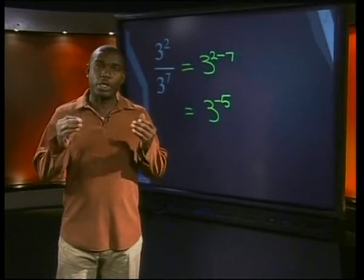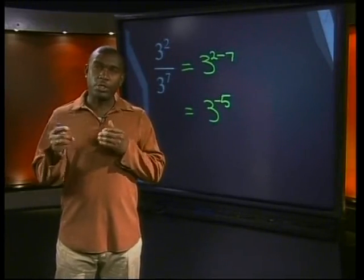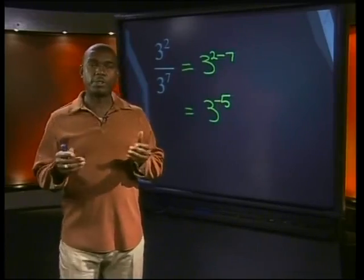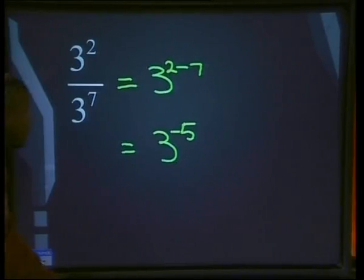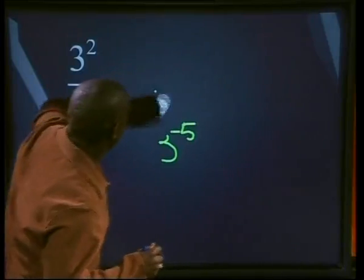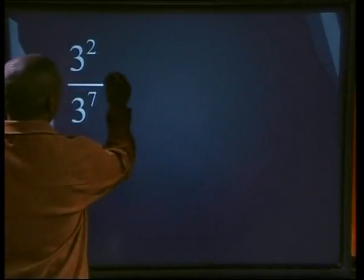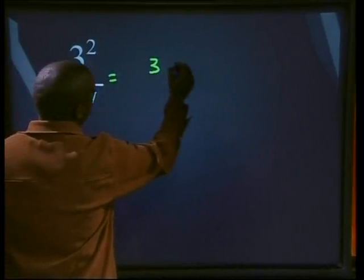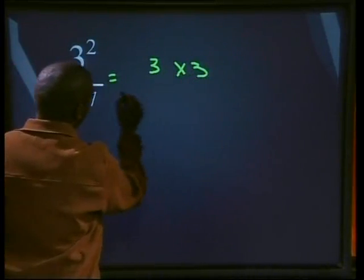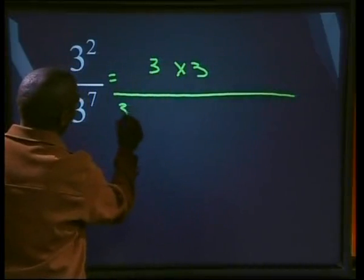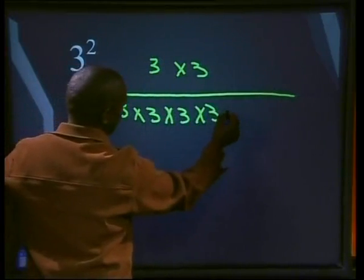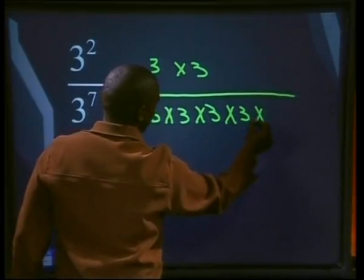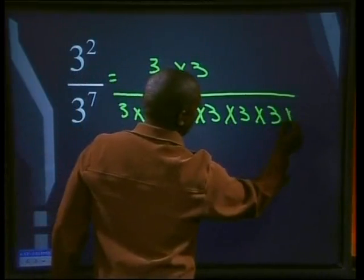We prefer to write powers with positive exponents only, as this makes it easier to solve exponential calculations. So how can we write three to the negative five with a positive exponent? When working out how rules work, it is always useful to start by expanding the example. So in this case we'll expand three squared over three to the power seven.